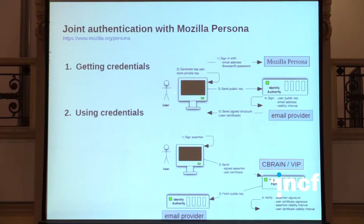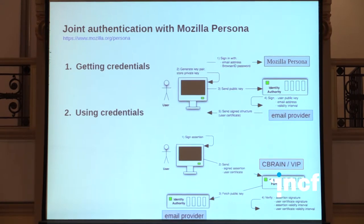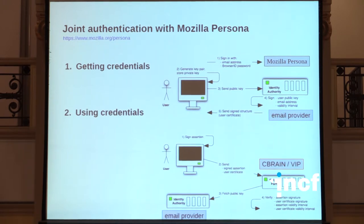The system works as follows: when a user wants to connect to a website using their email address, the system generates a key pair in the user's browser, and then the public key is signed by the user's email provider. If the email provider supports this technology — for instance Google or Yahoo — they sign it directly; otherwise Mozilla provides a fallback service. Once done, the user can sign assertions to connect to the platforms — C-Brain and VIP in our case. The platform then goes to the email provider to verify these assertions and confirm the signature is valid.